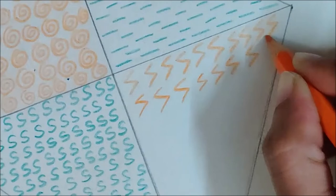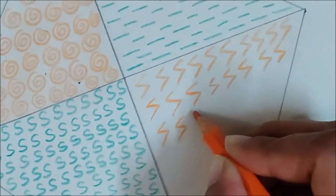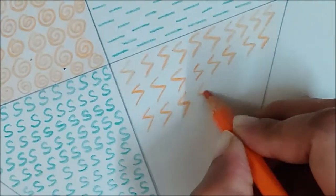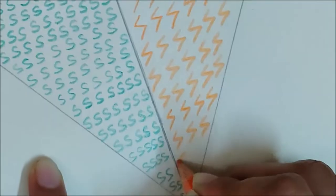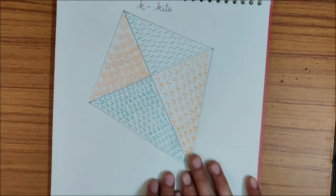See, this is a zigzag pattern. It also looks similar to S. But the points are pointed. Look, our kite is ready.